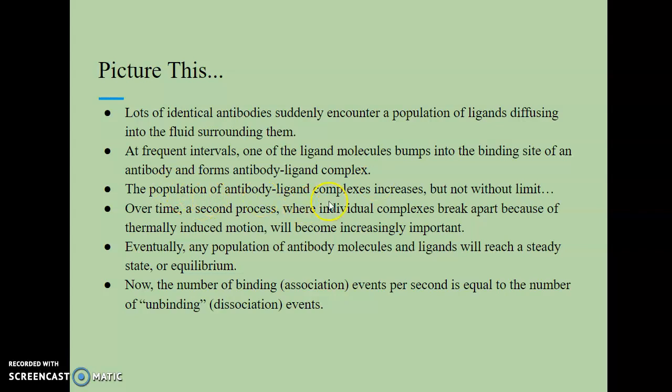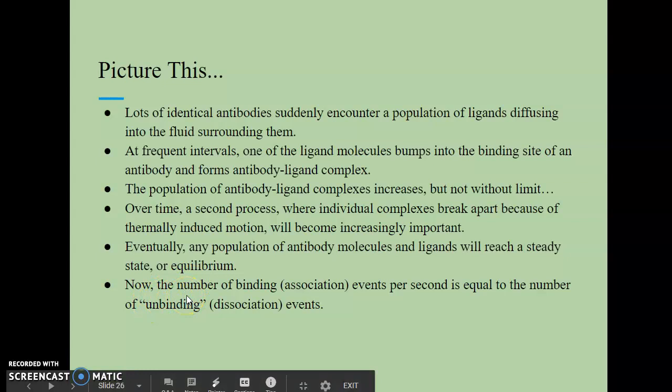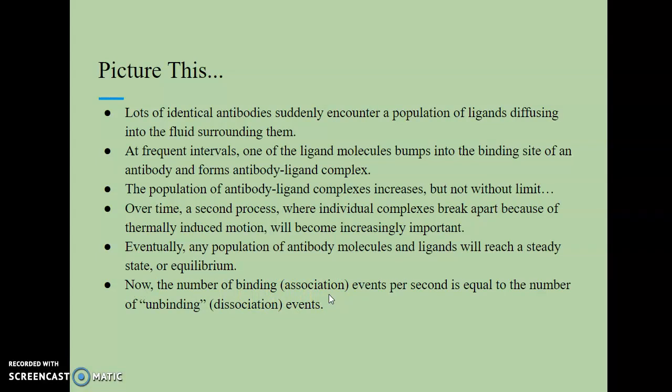So the population at this point of antibody-ligand complexes will increase, and it will continue to increase. But that increase of antibody-ligand complexes is limited. So over time, a second process where individual complexes break apart because of thermally induced motion will also become increasingly important. So eventually, then, any population of antibody molecules and ligands will reach what we call a steady state or equilibrium. So in other words, at this steady state or at this state of equilibrium, we now have the number of binding events, or what we refer to as association events, per second, is equal to the number of unbinding events, or what we refer to as dissociation events.